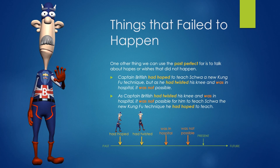Things That Failed to Happen. One other thing we can use the past perfect for is to talk about hopes or wishes that didn't happen. Captain Britlish had hoped to teach Schwa a new kung fu technique, but as he had twisted his knee and was in hospital, it wasn't possible. As Captain Britlish had twisted his knee and was in hospital, it wasn't possible for him to teach Schwa the new kung fu technique he had hoped to teach.